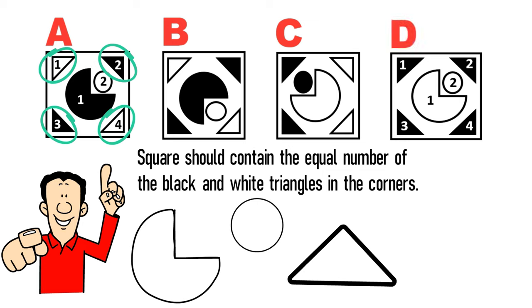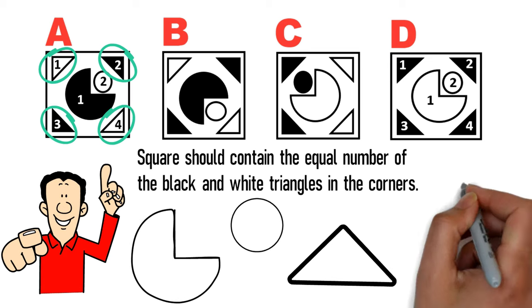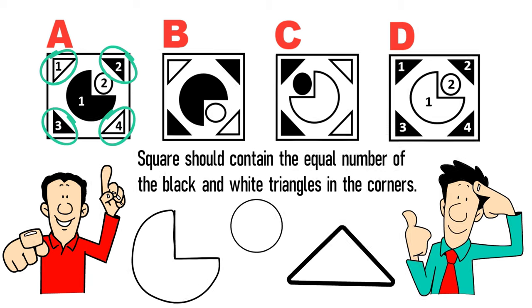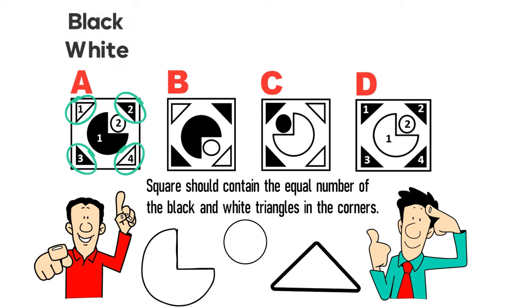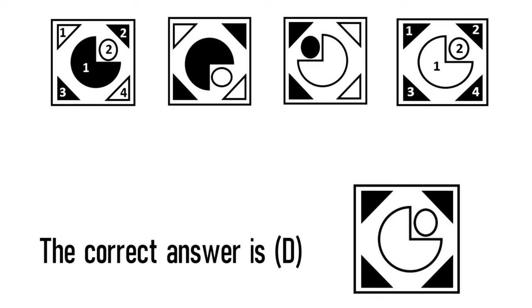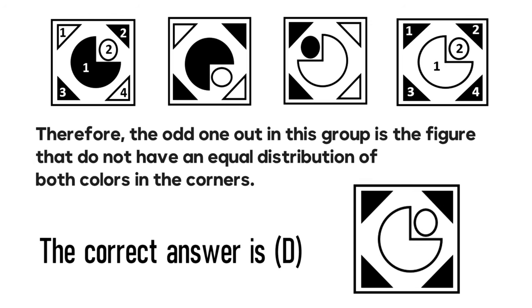But if we look at choice D, there are four black triangles in the corners. The circles in this picture do not have a pattern — their primary goal is to confuse you. If you look at the circles closely, the large-small circle pattern doesn't exist consistently. Based on this, we should ignore the circles and focus on the triangles. The shape that doesn't belong is the one without equal distribution of colors in the corners, so the correct answer is choice D.